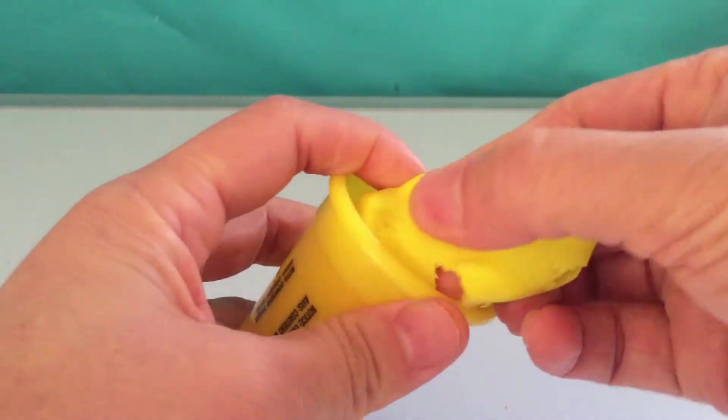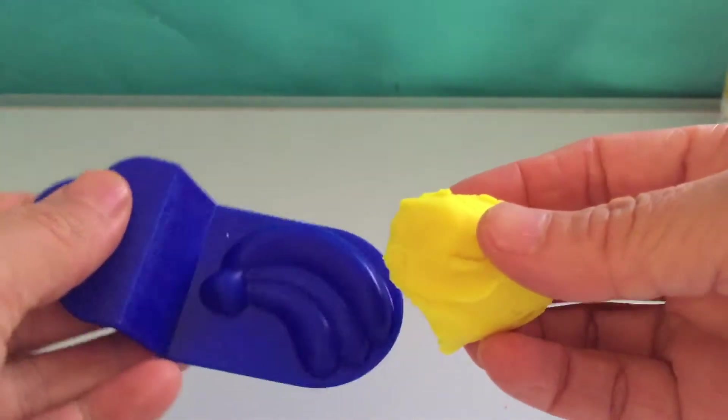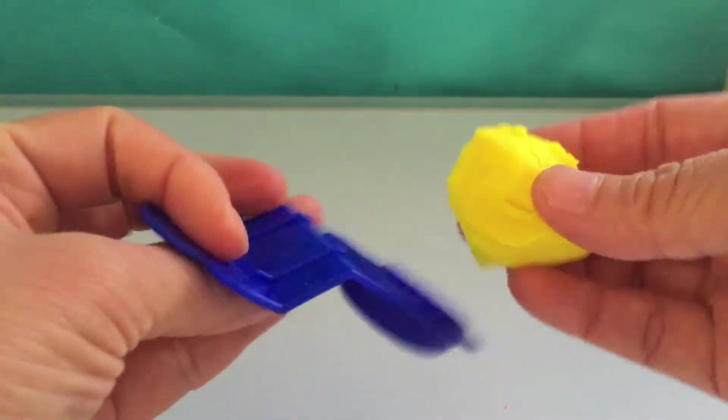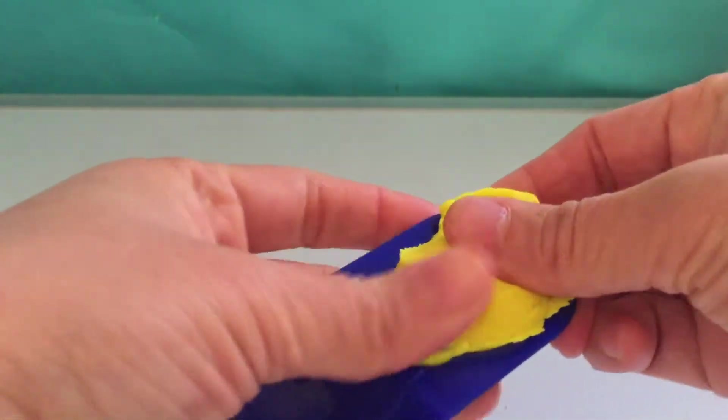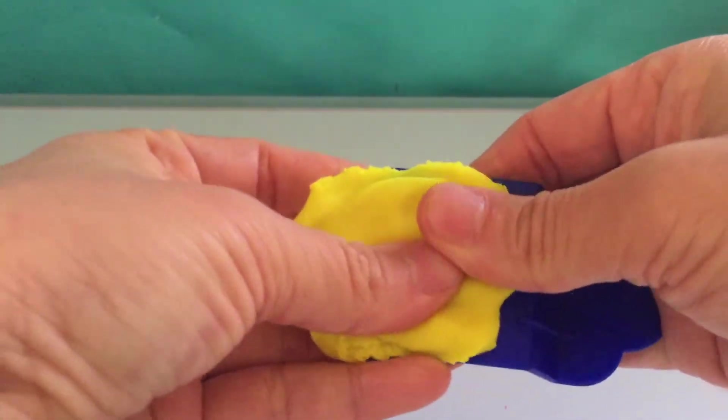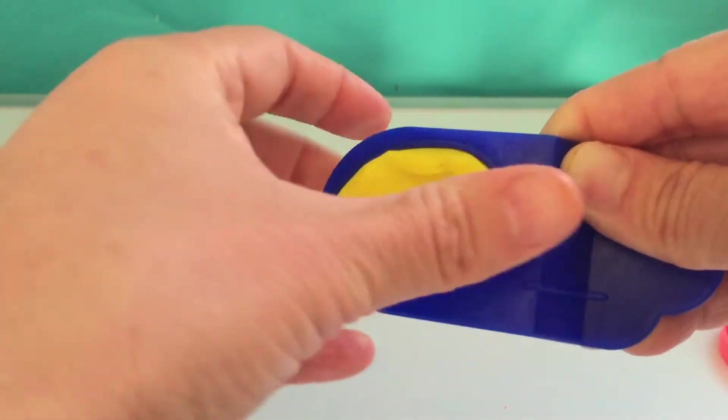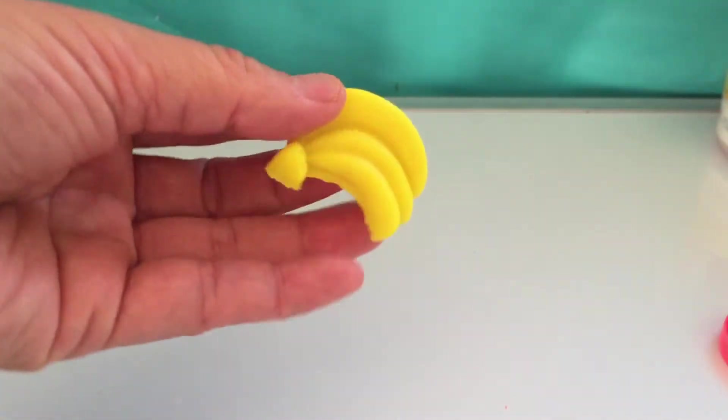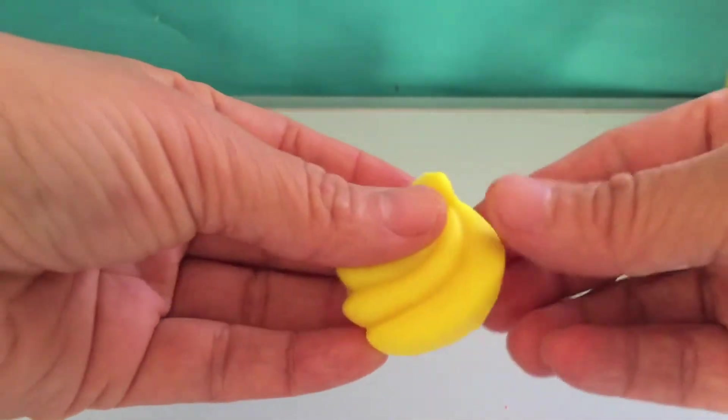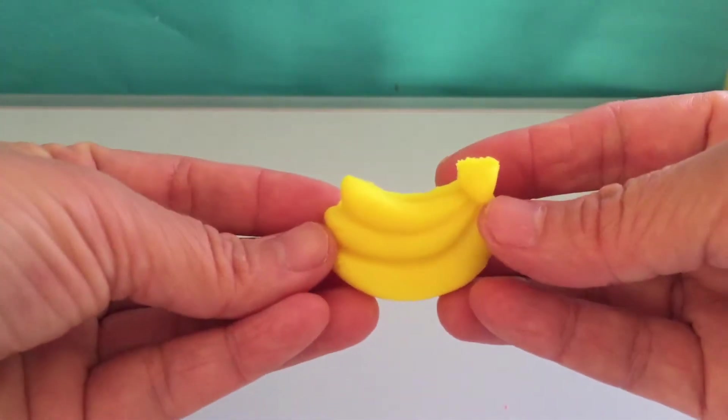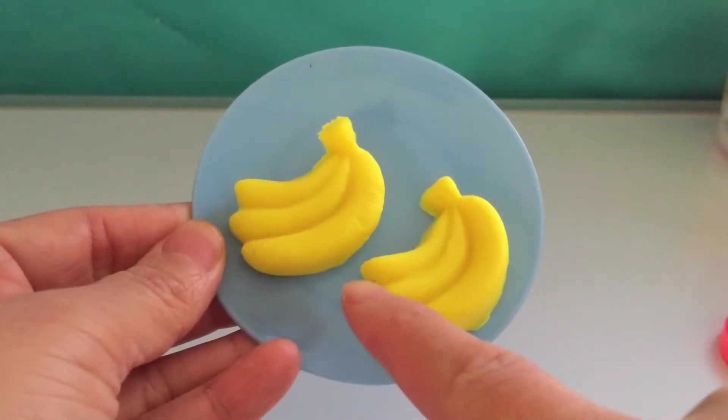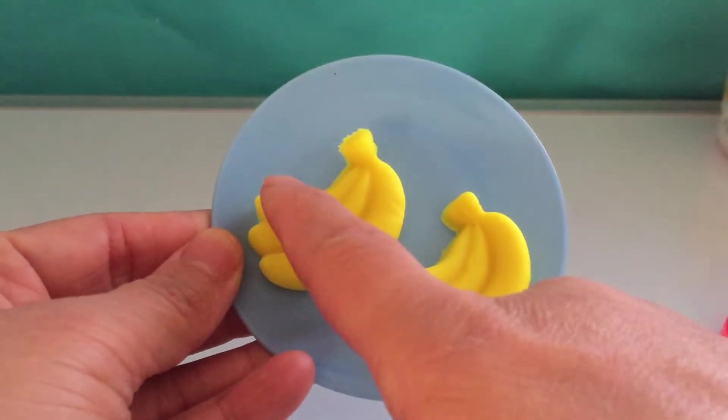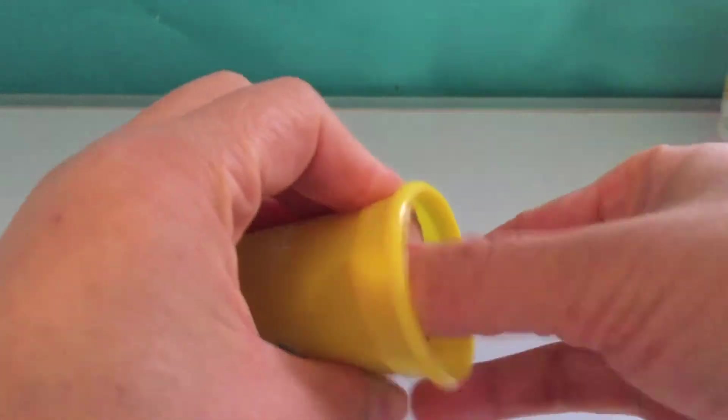With the yellow Play-Doh, we're going to make a bunch of banana. We have got one bunch of yellow banana. One, two, three, four, five, six bananas.